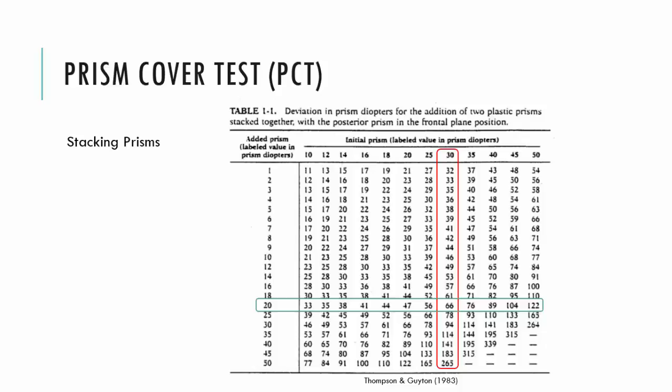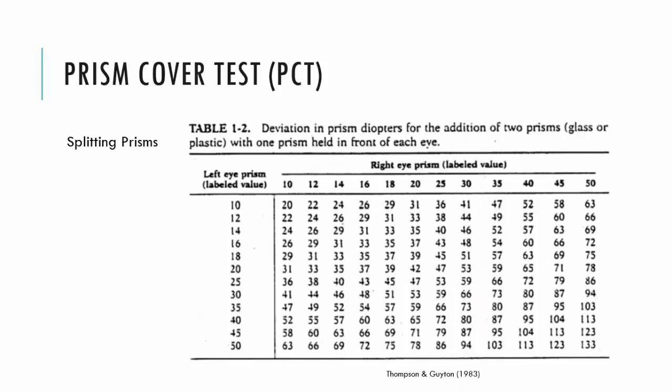There's also a separate table for splitting. Let's use the example again that we have a 30 and a 20 prism diopter. So, let's say the 30 is in front of the right eye and the 20 is in front of the left eye. So, 30 and 20. And here is the intersection at 53. So, in this instance, we have a 53-diopter prism if we split a 30 and a 20. So, we can see here that splitting doesn't have as much of an additive effect as stacking.